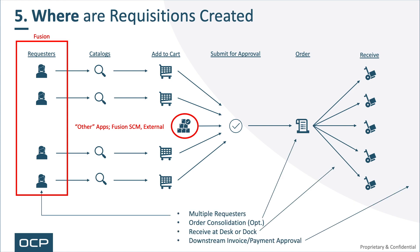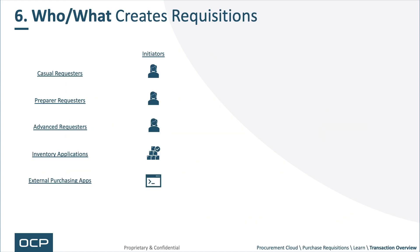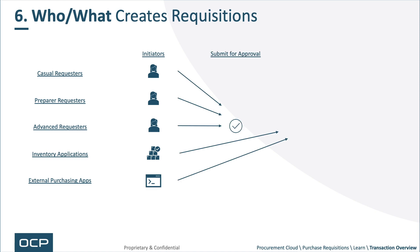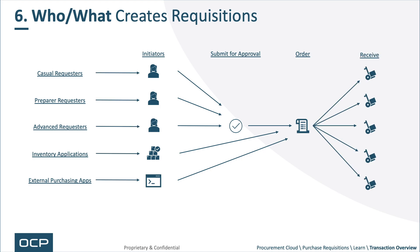Who or what creates requisitions? Casual requesters — usually someone filling out the simplified non-catalog form. Then there's a preparer, with three options: change a requisition line to a different requester, create a requisition on behalf of another requester, or assign all requisitions to another requester. And then there's the advanced requester, which is a form with about three times as many fields as the simplified non-catalog request. Inventory and external applications can also create requisitions, and there may be different approval routing based on who creates them — but they ultimately go out to an order and get received at desk or dock.